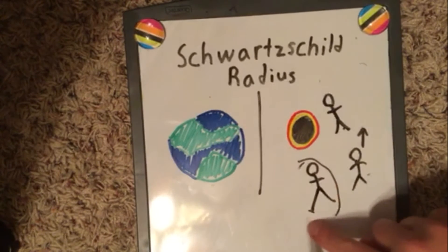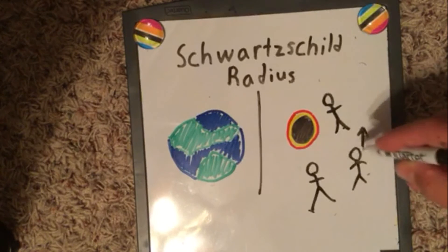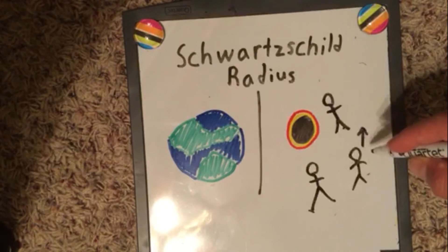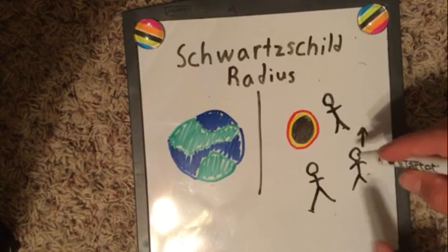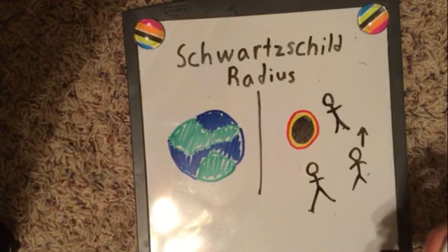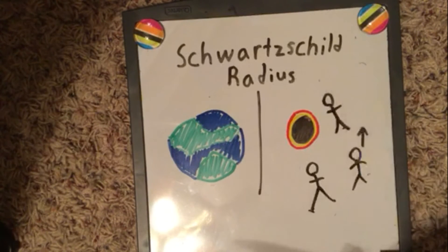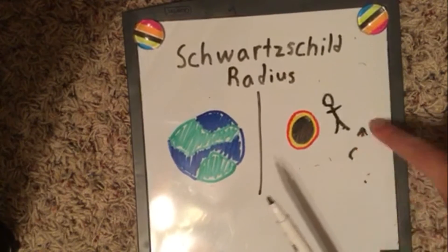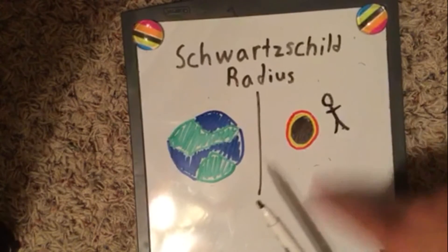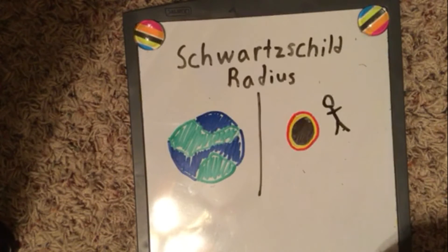But since there's nothing around you to reference your movement to, the person who is actually moving — relative to him — it would look like the other guy is moving. So he could say, 'No, I'm not moving, you're moving.' That is basically the theory of relativity — a very short definition. If you want to see me go into detail on that topic, please leave a comment down below.